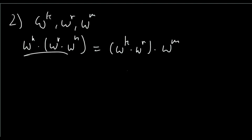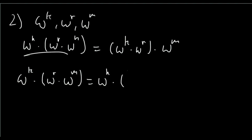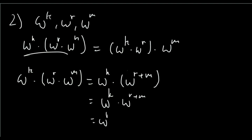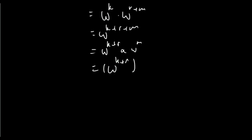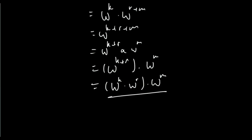It's actually quite simple. Starting with the left hand side: omega to the k times (omega to the r times omega to the m). Dealing with the part in brackets first, this is omega to the k times omega to the r plus m — we know this is a member of the set from closure — which equals omega to the k plus r plus m. For the right hand side, we split it as omega to the k plus r times omega to the m, which also equals omega to the k plus r plus m. Both sides are equal, so associativity holds for any general elements in the set.